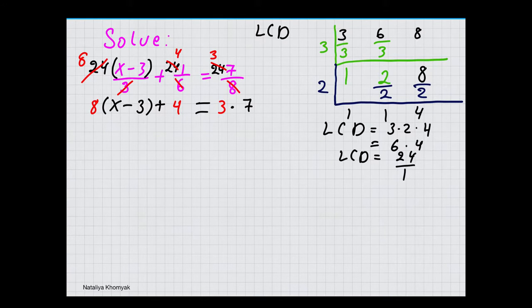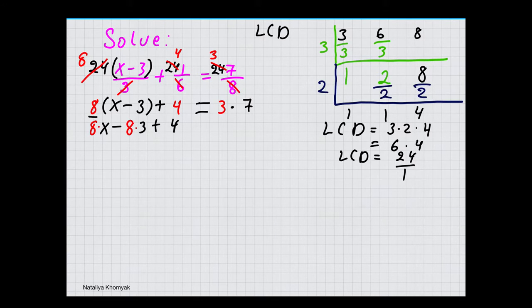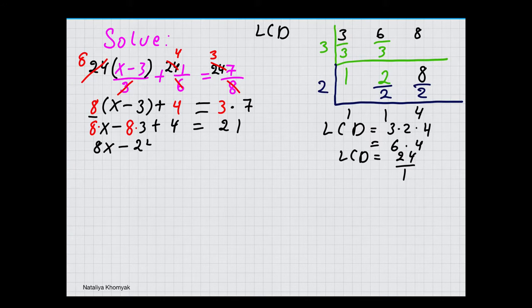We need to simplify each side as much as possible before solving, so the first thing to do is distribute this 8. We copy the parentheses (x minus 3), each of the terms gets multiplied by 8, plus 4, equals 3 times 7, which is 21. So we have 8x minus 8 times 3 which is 24, plus 4, equals 21.